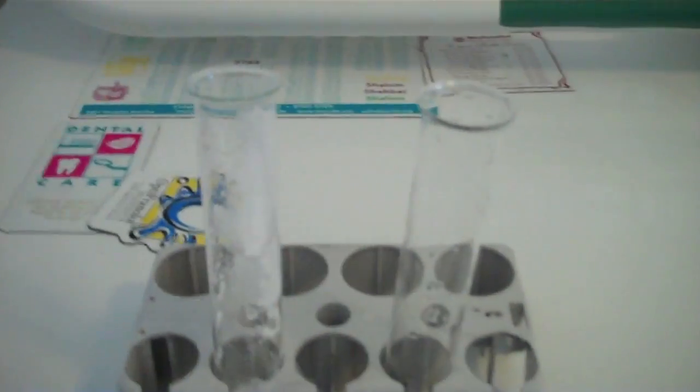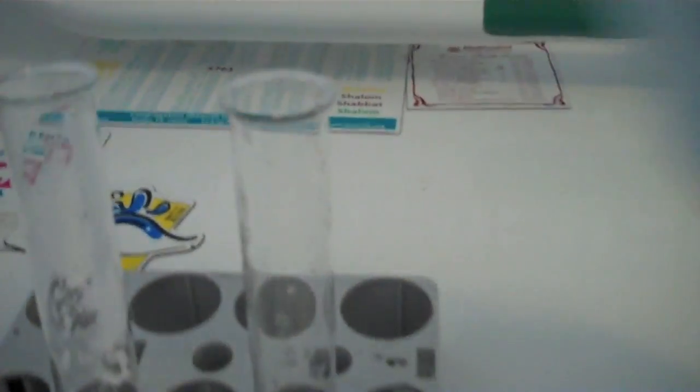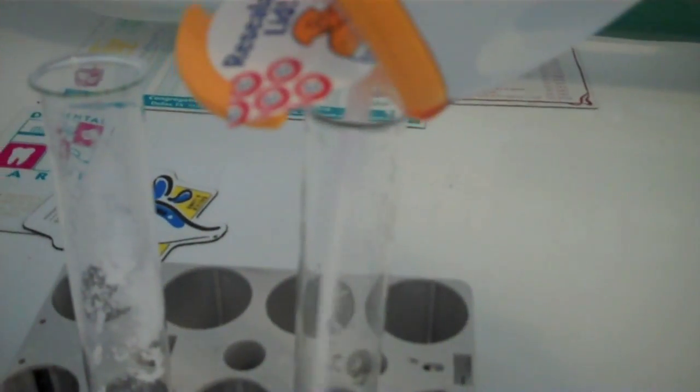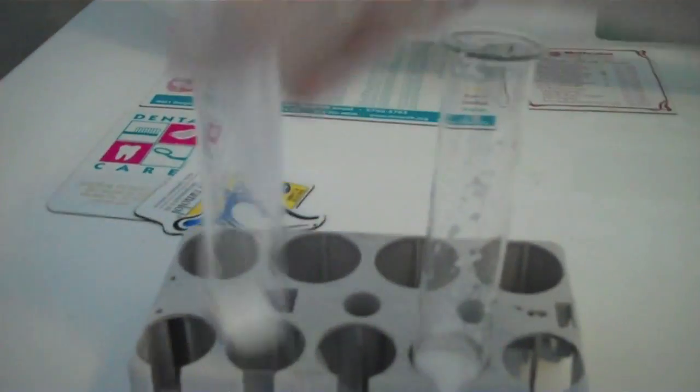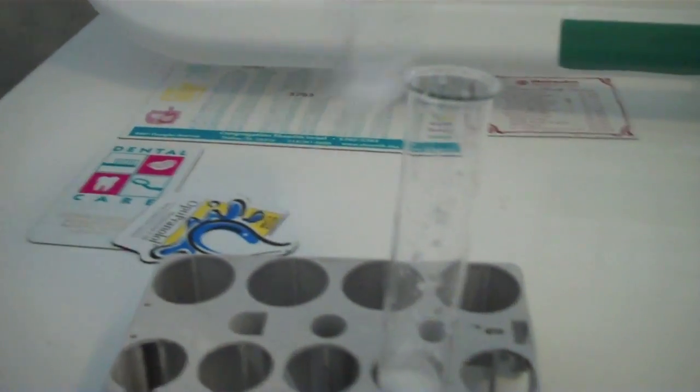So this is my sample of sodium carbonate I've made, and in this test tube I'm going to place some sodium hydrogen carbonate. Now I'm going to place a little bit of pH indicator.